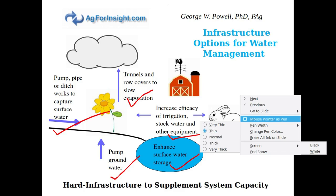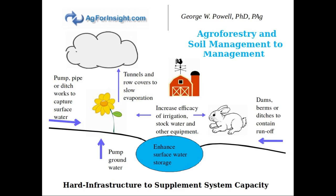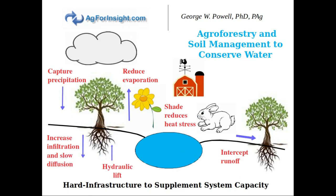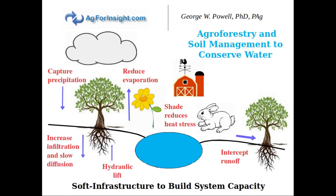A major disadvantage of the infrastructure approach is, of course, the costs — taking an infrastructure approach is very expensive. With soft infrastructure, we're looking at changes in management for the most part, but also changes to soil and vegetation through practices such as agroforestry and soil carbon management, to conserve water and build the system's capacity to trap and hold that water.